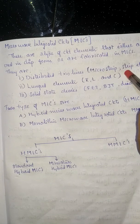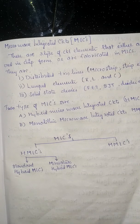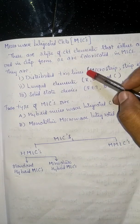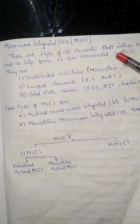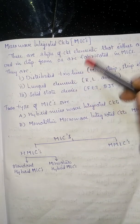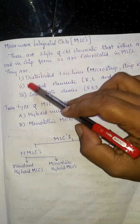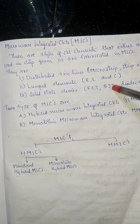For distributed transmission lines, these include microstrip, slotted strips, co-planar strips, and parallel strips. The distributed transmission line depends upon the transmission line used within the microwave network. Microstrip is the most commonly used distributed transmission line in MICs.